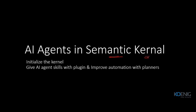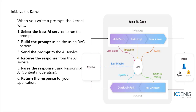Now let's understand AI agents in the Semantic Kernel. We initialize the kernel, give the AI agents skills via plugins, and improve automation with planners. When you write a prompt, the kernel selects the best AI service. For example, if you pass an audio message, the audio AI service is chosen to convert it to text. If you pass text and want to identify the language, the language AI service is selected.